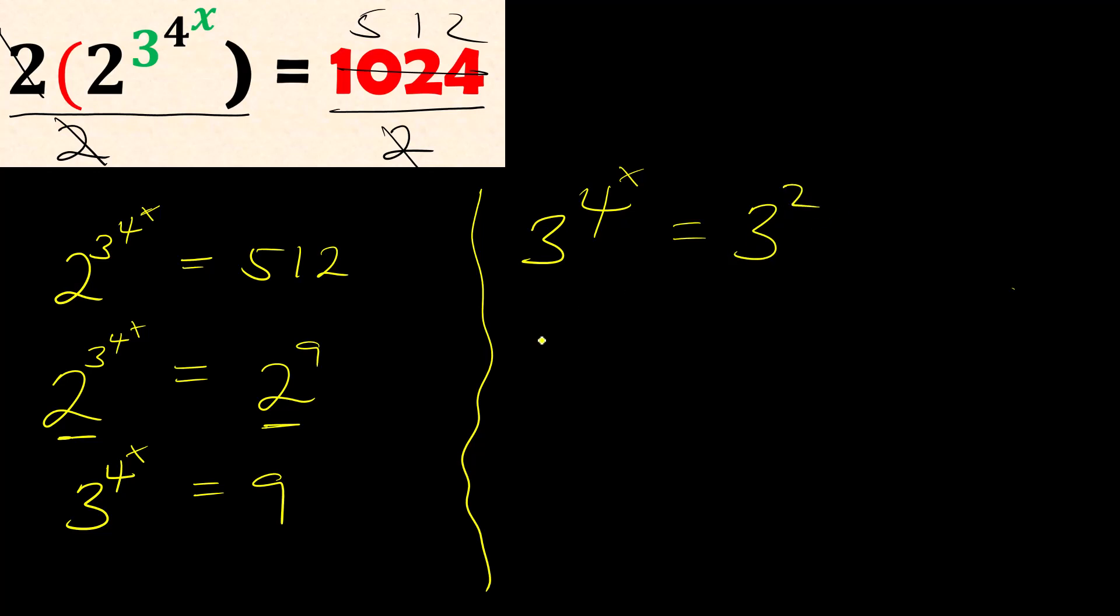So we have 4x = 2. Now you can see it's raised to 2. Therefore 4x = 2, very simple. So 4x equals 2, therefore x is...